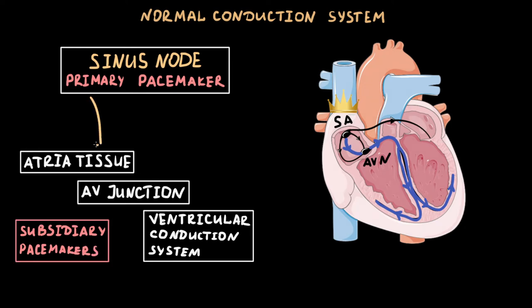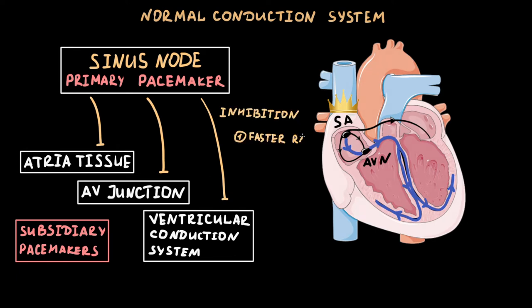As the primary pacemaker, the sinus node inhibits latent pacemakers by its faster rate and overdrive suppression.